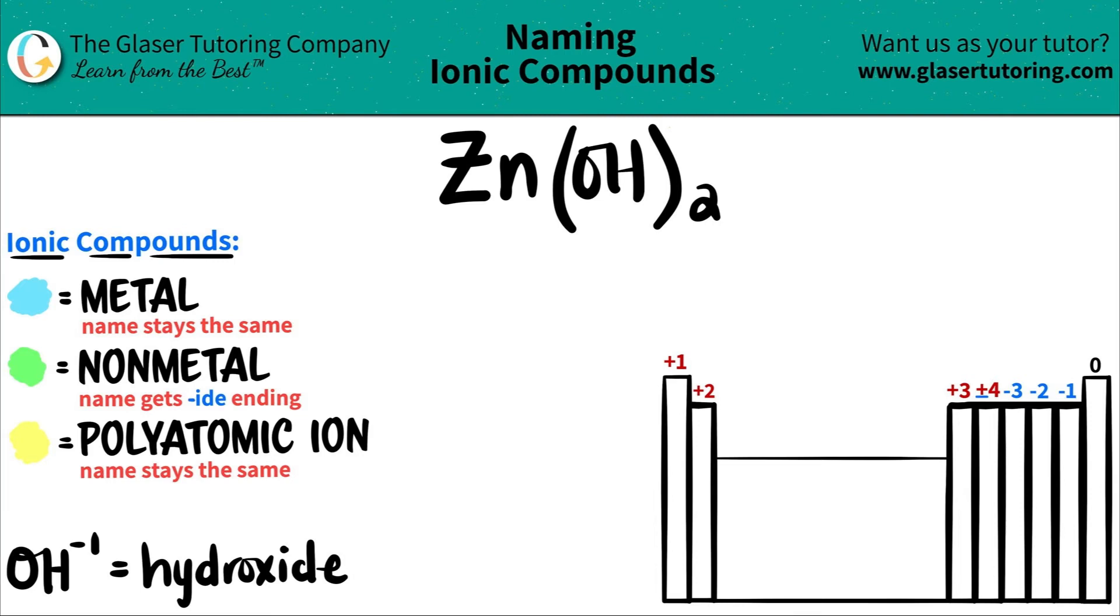Today, we are going to be naming the ionic compound Zn(OH)2. Now here's a trick guys. If you see that your compound has three or more different elements in it, you know that you're dealing with at least one polyatomic ion. So it's always best to identify the polyatomic ion and then work from there.